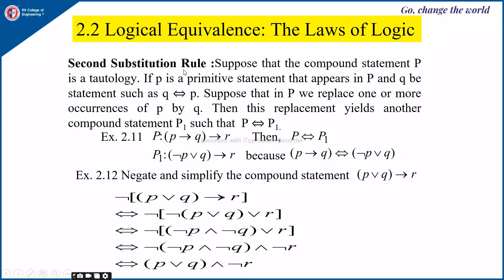The second substitution rule: suppose compound statement P is a tautology. If p is a primitive statement in P and Q is a statement such that Q is equivalent to p, then replacing one or more occurrences of p by Q yields another compound statement P₁ such that P is equivalent to P₁. For example, if P is P→Q→R, then P₁ is (¬P∨Q)→R, since P→Q is equivalent to ¬P∨Q.